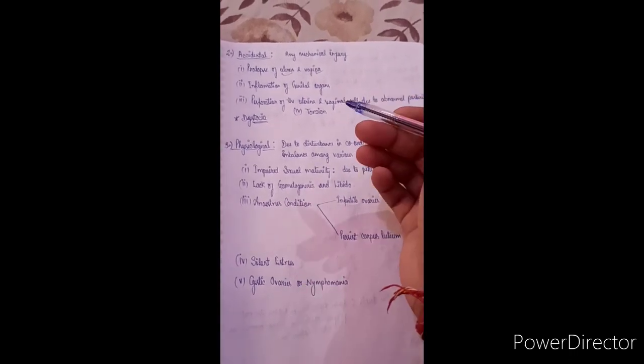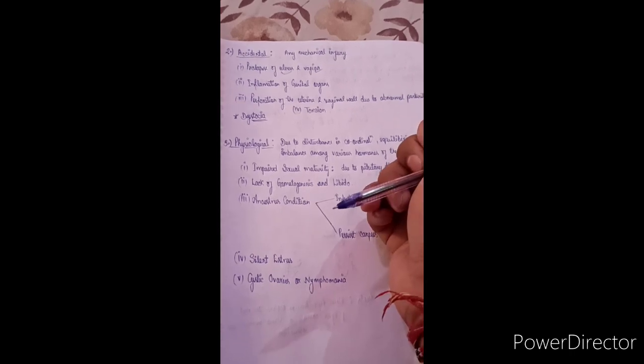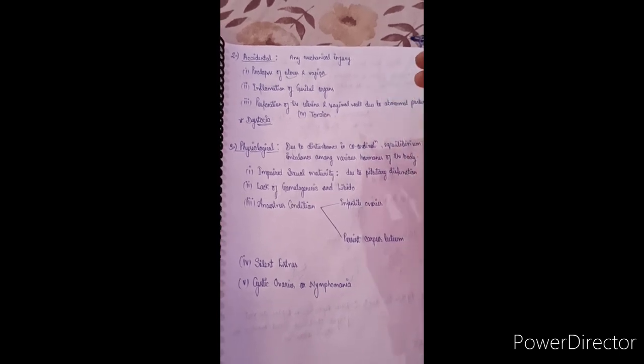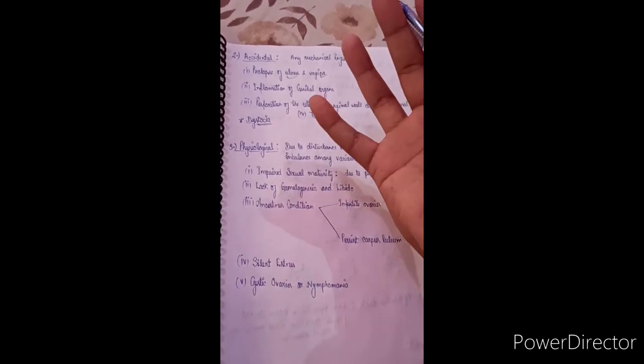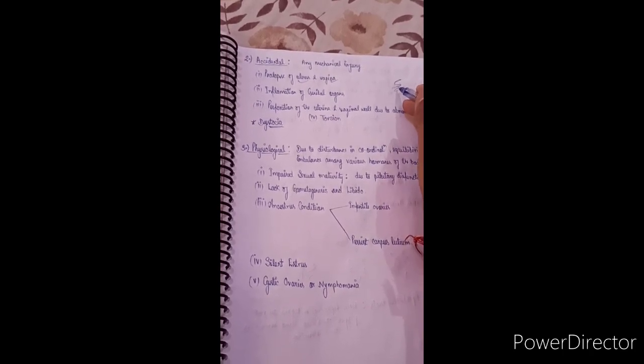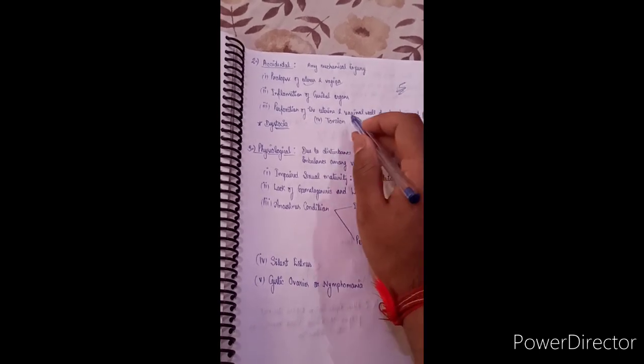Abnormal parturition refers to an abnormal posture of the fetus — that is, the calf. Normally during parturition, the water bag appears first, and then the calf's head and forelegs are expelled. However, if the fetus posture is abnormal, this abnormal parturition can cause perforation — meaning holes — in the vagina and uterus, leading to sterility.